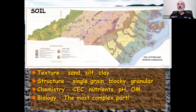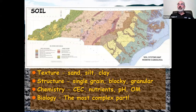Of course there's chemistry in the soil: things like cation exchange capacity, nutrient levels such as phosphorus, potassium, and nitrogen, pH or soil acidity, and the presence of organic matter. Then the fourth component is biology, and this is the part that's been probably the least understood, the least studied, and by far the most complex part of the soil system. We'll learn a lot more about that on the second night next week.